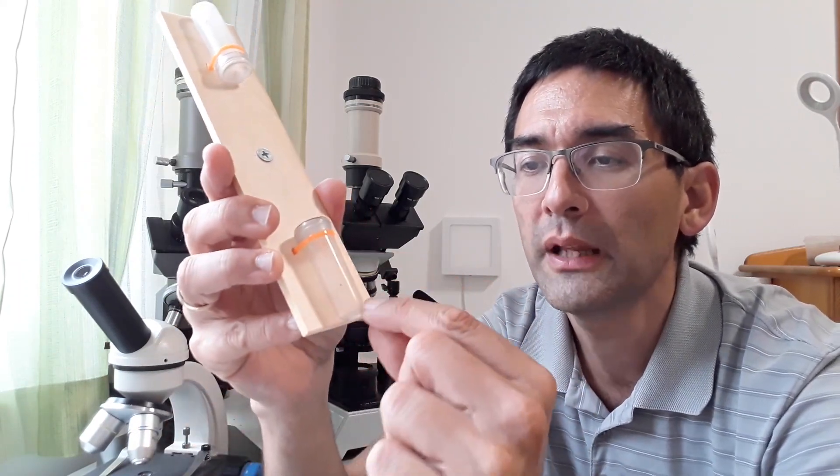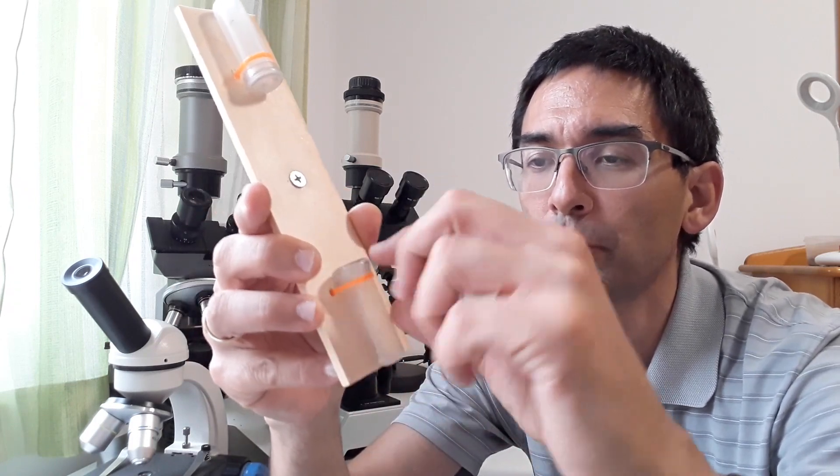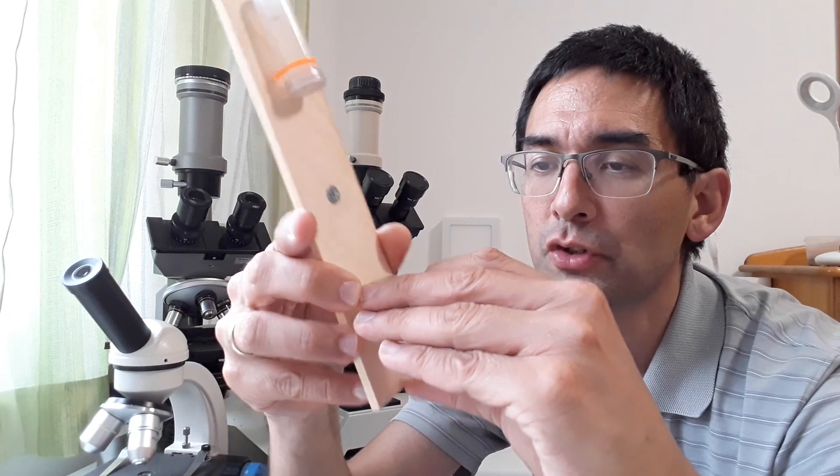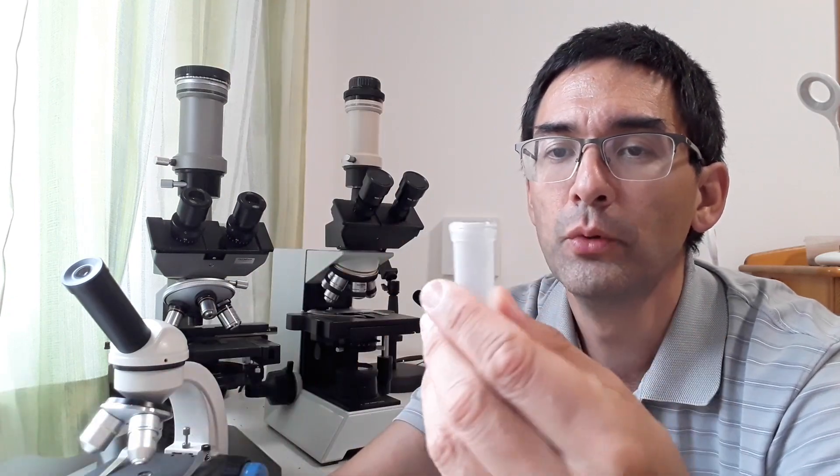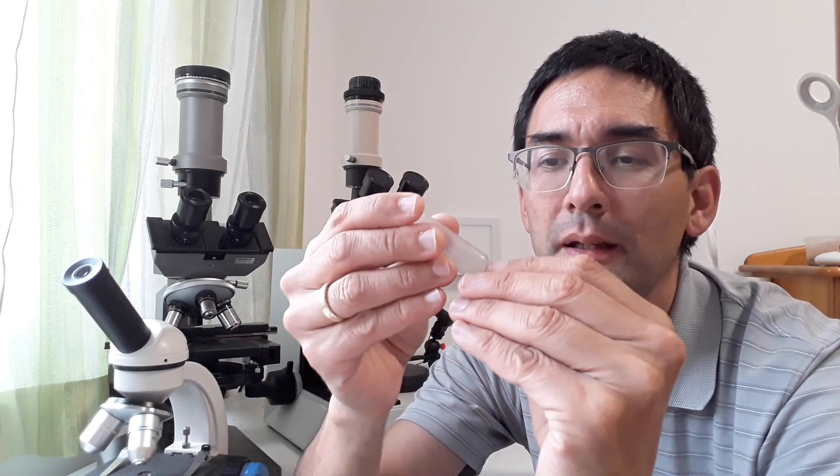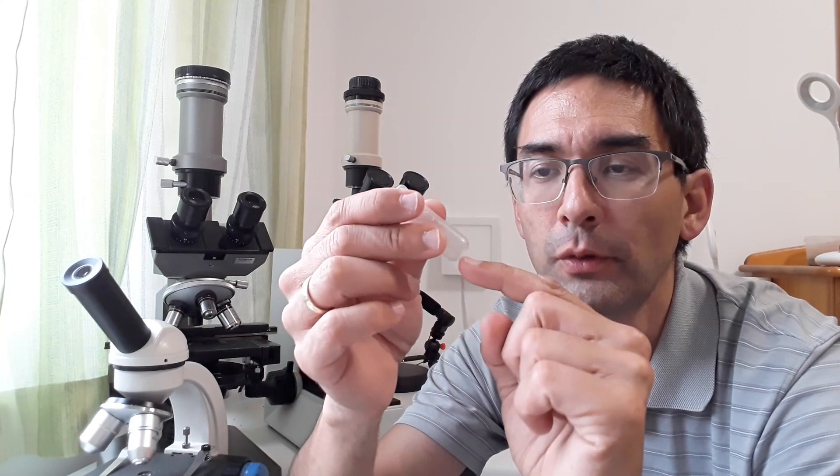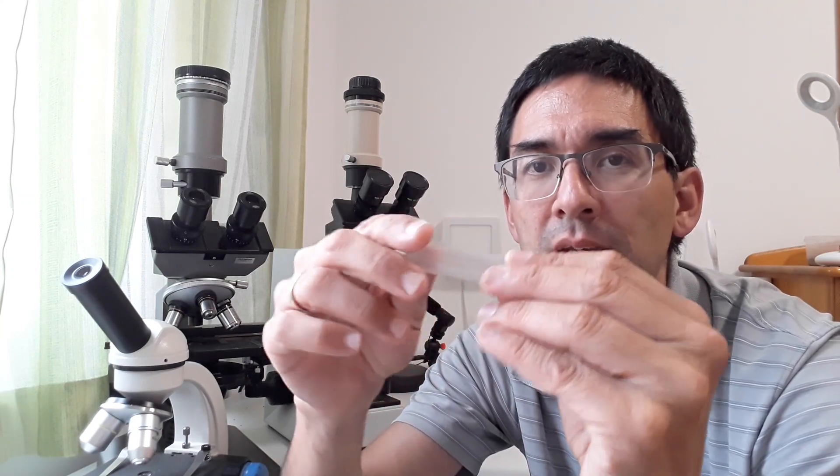All the solid particles will collect in the bottom. What you do is carefully remove the supernatant, the top water. Then on the bottom where you have the pellet, this is more concentrated and you can put something from the pellet on the microscope slide.